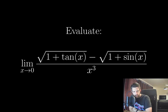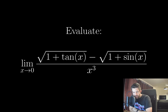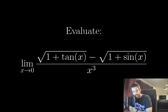I'm not sure exactly which limit evaluation technique will be appropriate here. This is a 0 over 0 form of a limit. Substituting 0: the denominator is clearly 0, and in the numerator tan(0) and sin(0) are both 0, so both square roots equal 1, and with the minus sign we get 0 in the numerator. So perhaps L'Hôpital's rule is the thing to go for here.